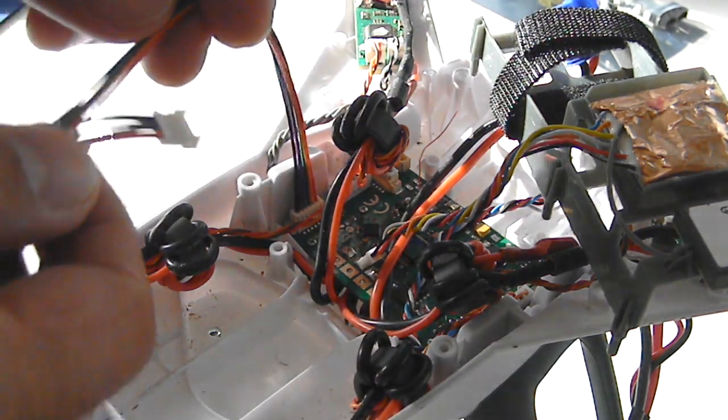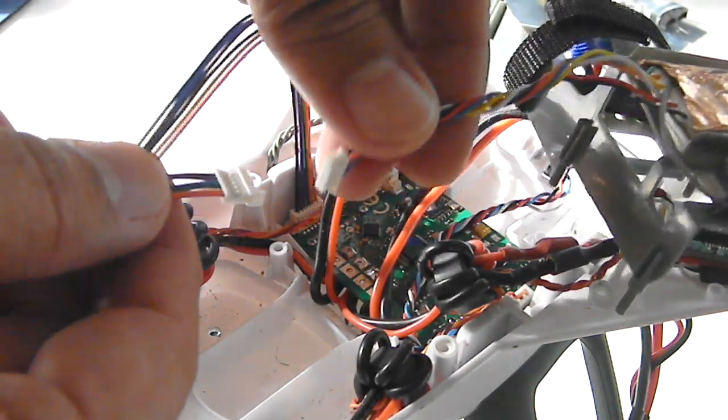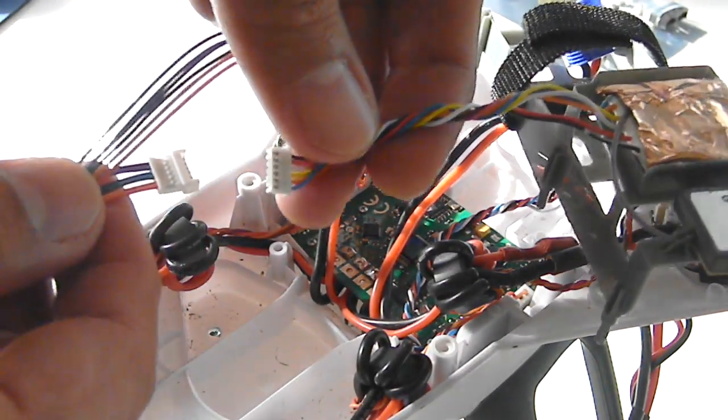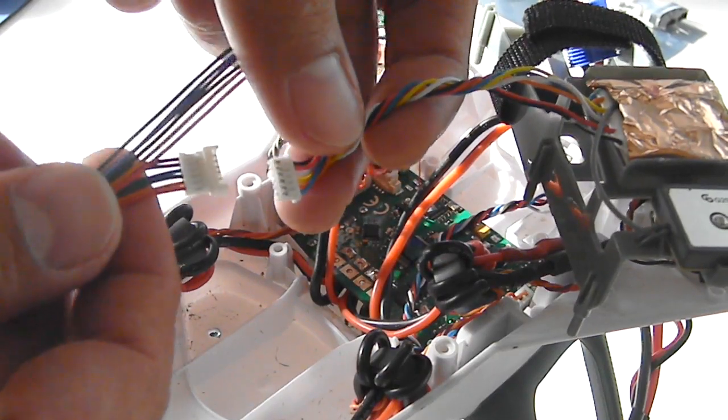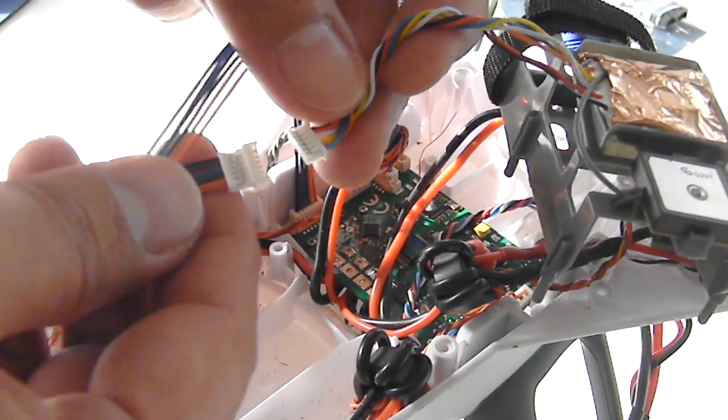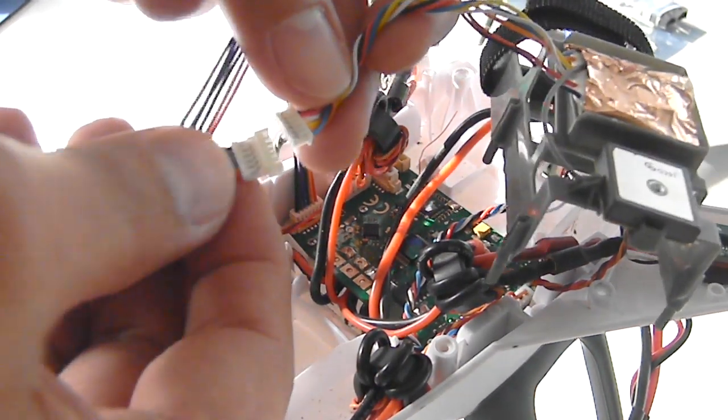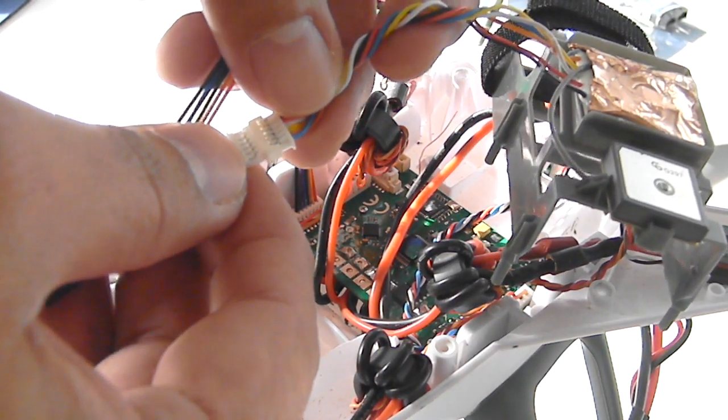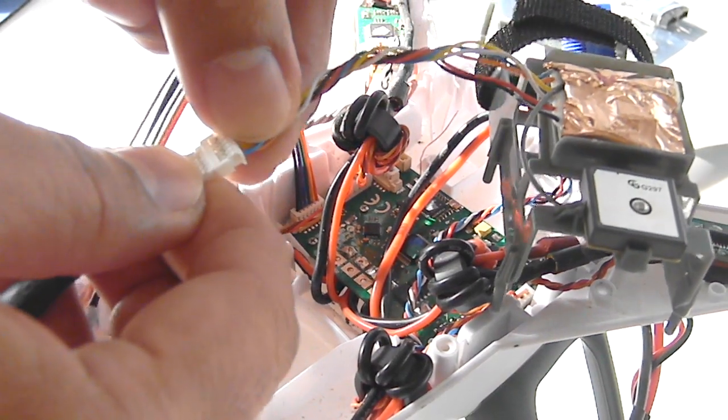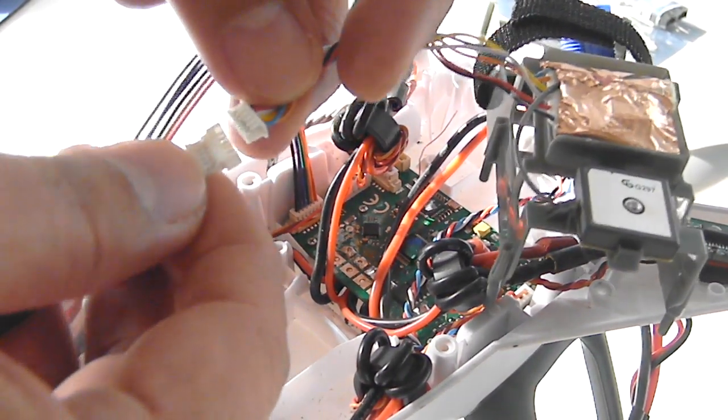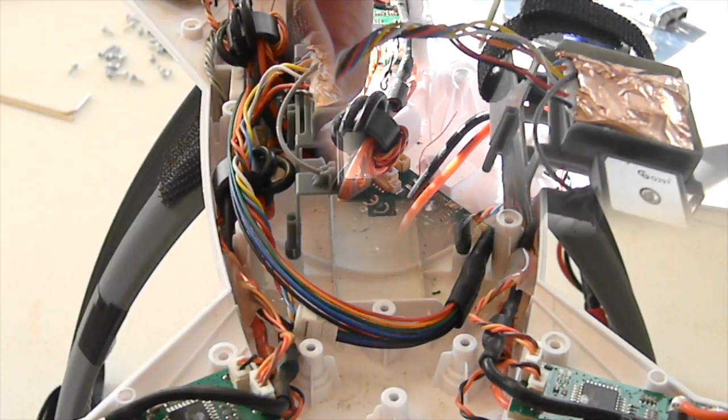And so now I'm just going to connect the GPS to the Flytrex cable here. And again, it's just putting it right here. They made it pretty simple and easy because you can't really make a mistake. It only fits one way.